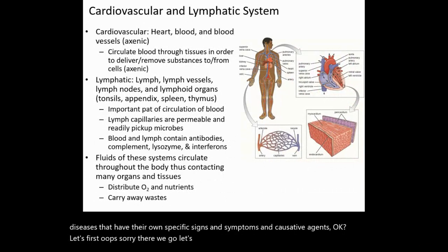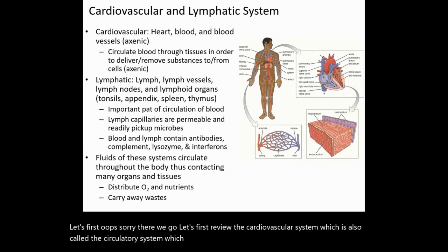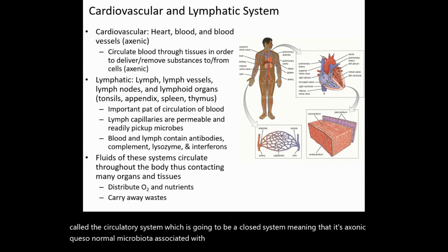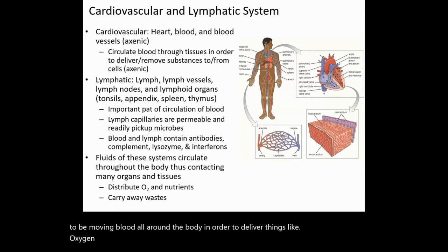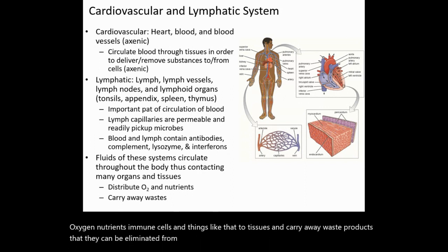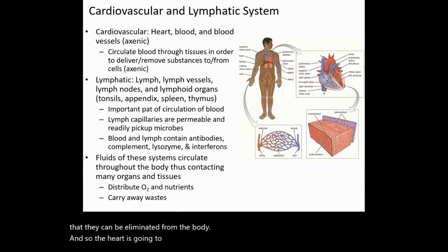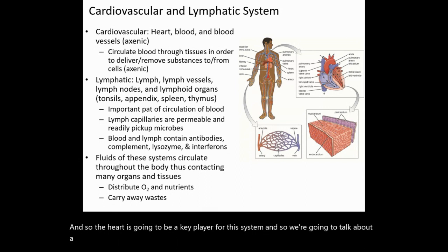Let's first review the cardiovascular system, which is also called the circulatory system. It's going to be a closed system, meaning that it's axenic — so no normal microbiota associated with it. This network of vessels and organs is going to be moving blood all around the body in order to deliver things like oxygen, nutrients, and immune cells to tissues, and carry away waste products so they can be eliminated from the body. The heart is going to be a key player for this system, and we're going to talk about a couple of diseases affecting the heart.